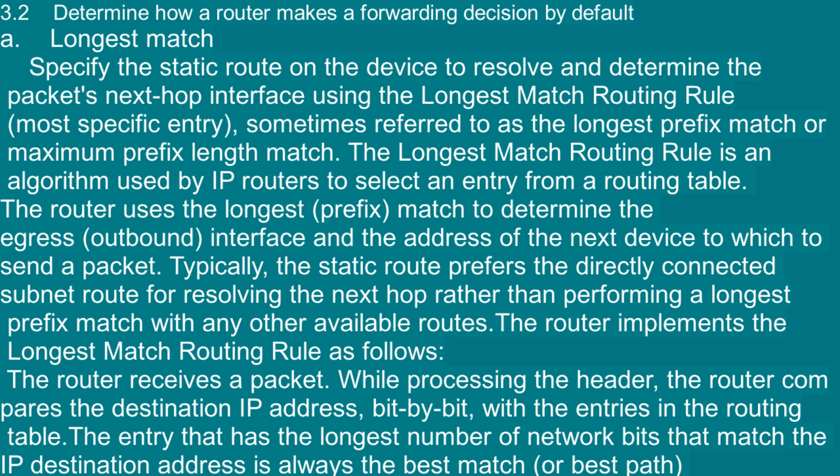3.2 Determine how a router makes a forwarding decision by default. A — Longest match: Specify the static route on the device to resolve and determine the packet's next hop interface using the longest match routing rule — the most specific entry, sometimes referred to as the longest prefix match or maximum prefix length match. The longest match routing rule is an algorithm used by IP routers to select an entry from a routing table. The router uses the longest prefix match to determine the egress outbound interface and the address of the next device to send a packet. Typically, the static route prefers the directly connected subnet's route for resolving the next hop rather than performing a longest prefix match with any other available routes.